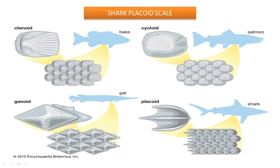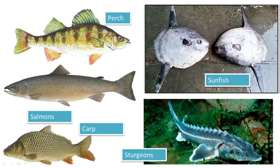In the case of the cycloid scale, its arrangement is also in an overlapping pattern. The cycloid scale can be observed in salmon and carp fishes, where it is most common.